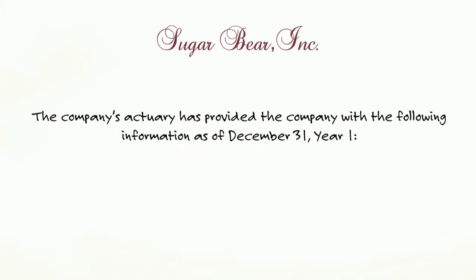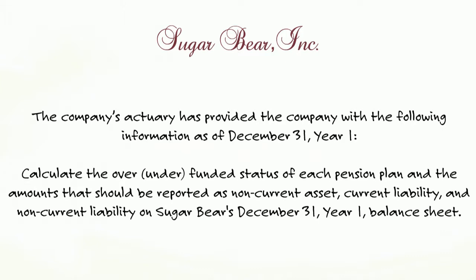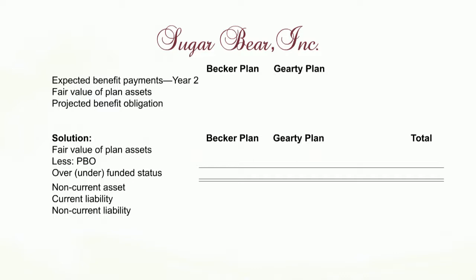So the company's actuary has provided the company with the following information at December 31st. We are to calculate the over or underfunded amount of the pension plan and how much of it is current versus non-current for Sugar Bear at the end of the year. We have three pension plans: the Becker plan, the Garrity plan, and the Brown plan.